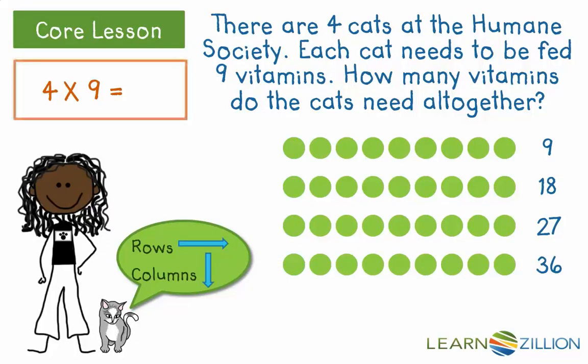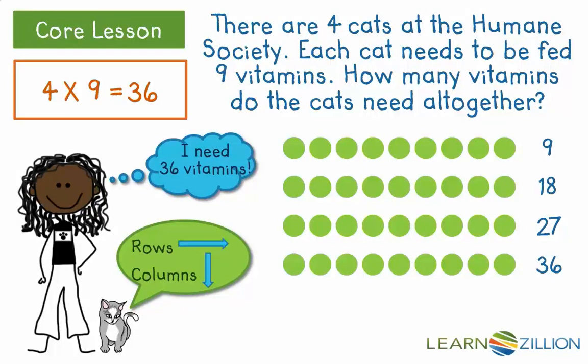So, 4 times 9 equals 36. Dominique needs 36 vitamins to feed the cats.